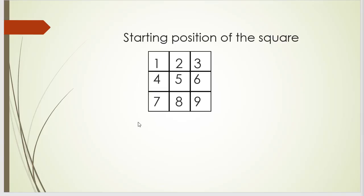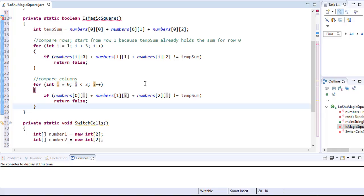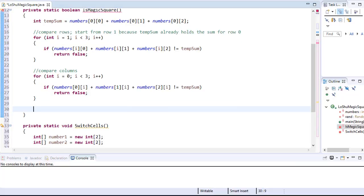In the first iteration, we will have index zero-zero, then one-zero (next row, same column), then two-zero (third row, same column — column index zero). In the next iteration, we go back to the first row and the column is one: indexes zero-one, one-one, and two-one. And finally zero-two, one-two, and two-two. So if our rows have the same sum and the columns have the same sum, now we can check the diagonals.